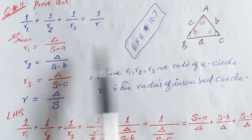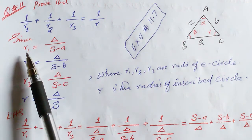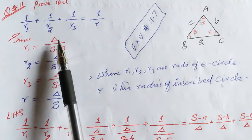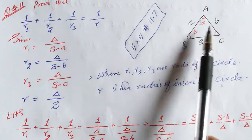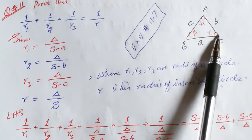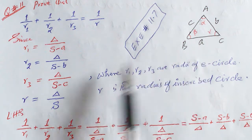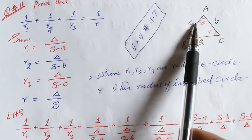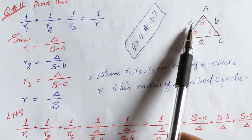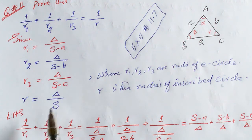The radius of the excircle opposite to side a of the triangle is r1 = Δ/(s − a). The radius of the excircle opposite to side b is r2 = Δ/(s − b), and the radius of the excircle opposite to side c is r3 = Δ/(s − c).